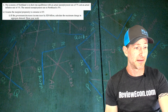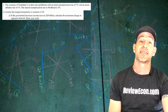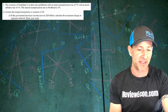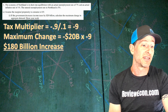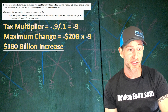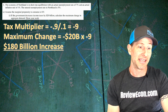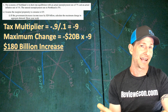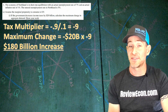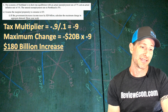For Part C, assuming the marginal propensity to consume is 0.9 and the government decreases income taxes by $20 billion, we calculate the maximum change in aggregate demand. The tax multiplier is negative 0.9 divided by 0.1, giving us negative 9. That gives a maximum change of negative $20 billion times negative 9, which is a $180 billion increase in GDP. The negative signs may not be required; absolute value should be fine.